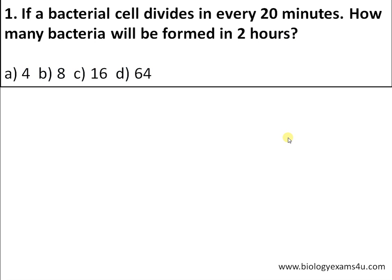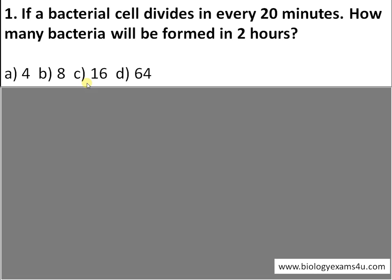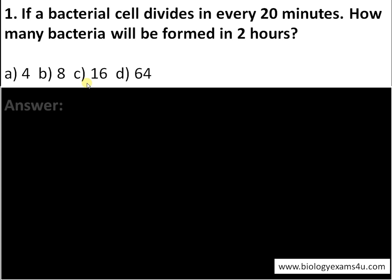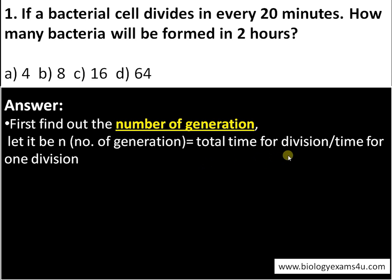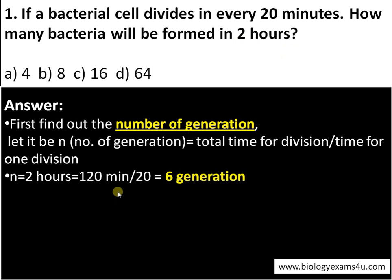If a bacterial cell divides every 20 minutes, how many bacteria will be formed in two hours? Options: A) 4, B) 8, C) 16, D) 64. To answer this, first find the number of generations: number of generations = total time for division divided by time for one division. Total time is two hours, that is 120 minutes, divided by 20 minutes per division.